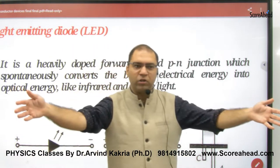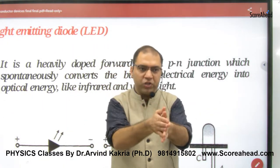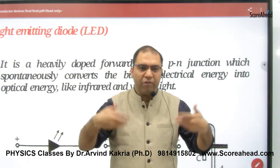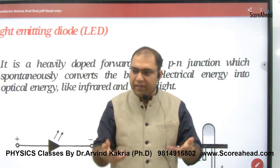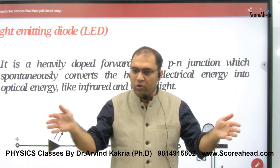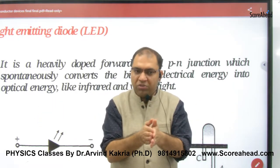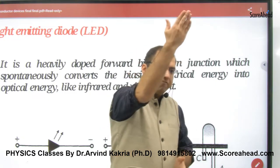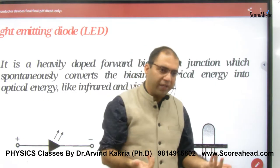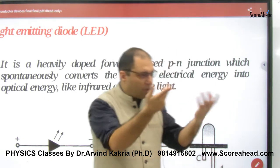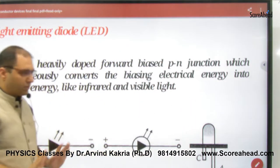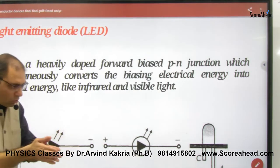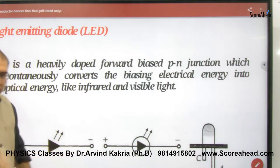Because the battery provides forward biasing, electrons and holes gain kinetic energy and recombine at the junction. They release this energy in the form of light. So light is emitted. In forward biasing, when electrons and holes recombine at the junction, light is emitted — that is the LED's principle.